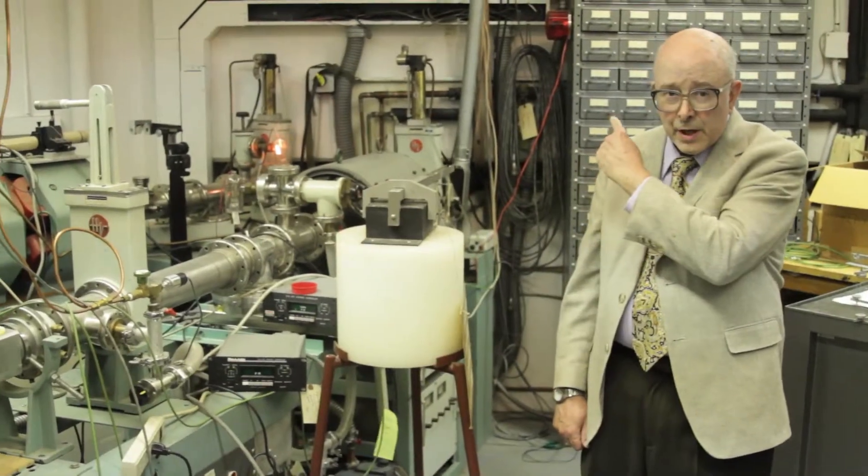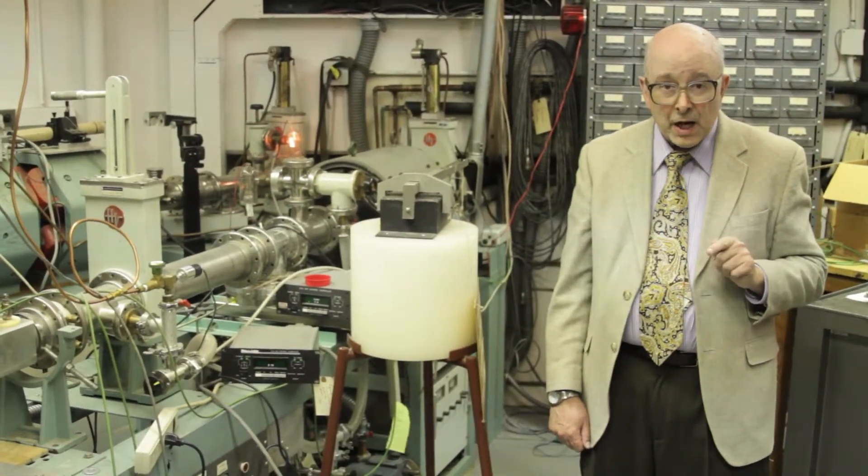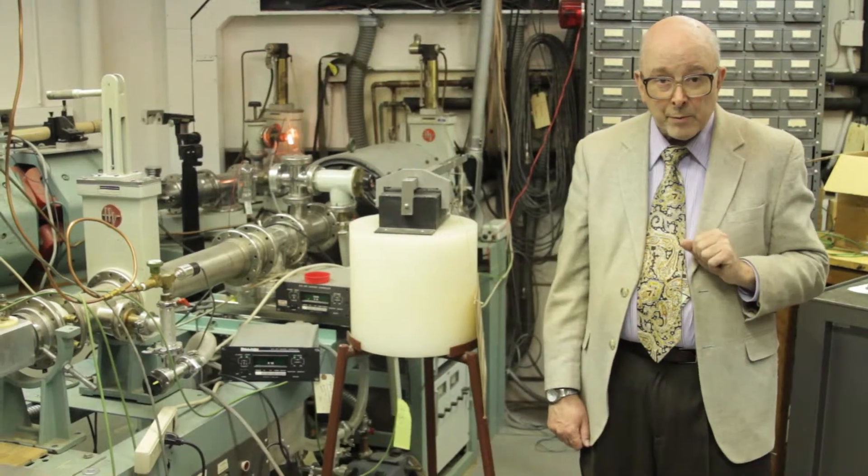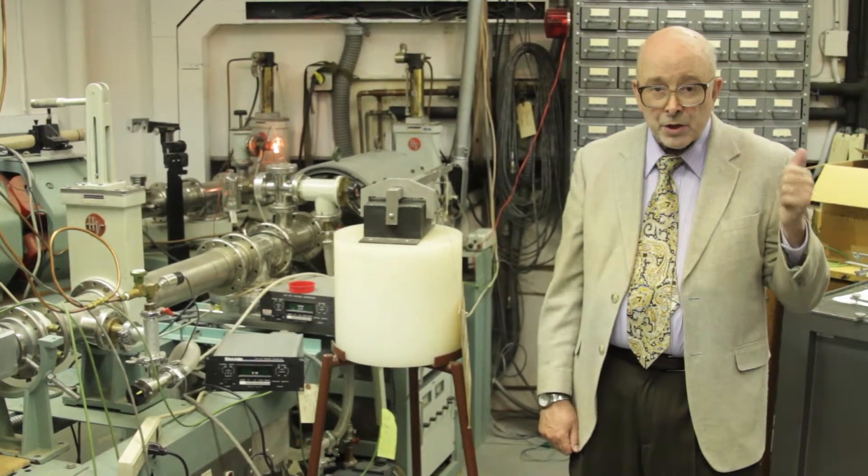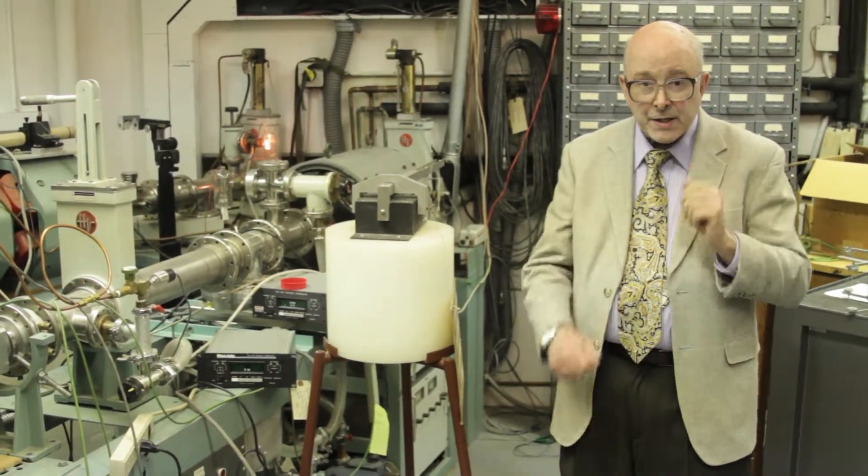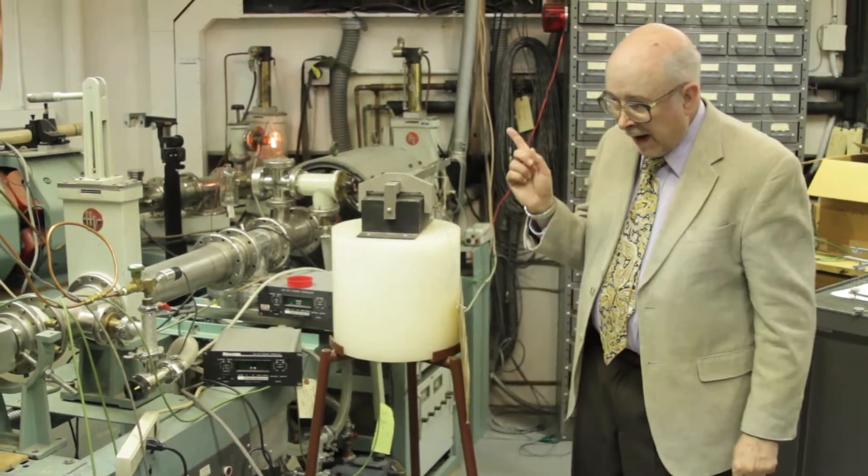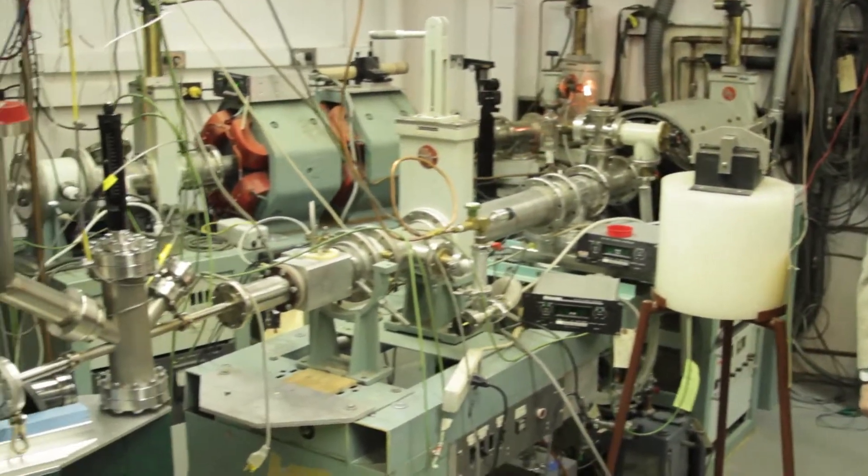The facility we just saw is the accelerator itself. It produces the energetic charged particle beams. Once the charged particle beams are available, then we use magnets to skew that beam through the various evacuated pipes through various areas.